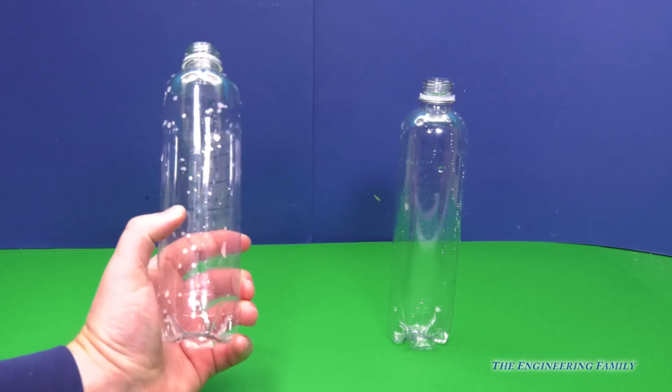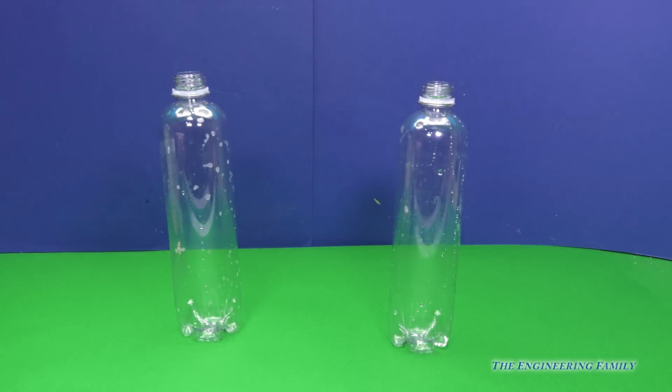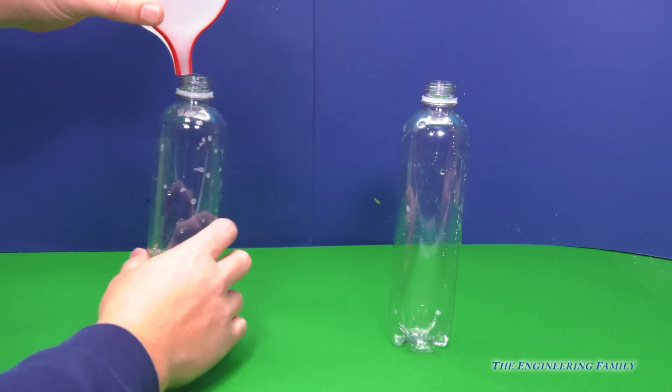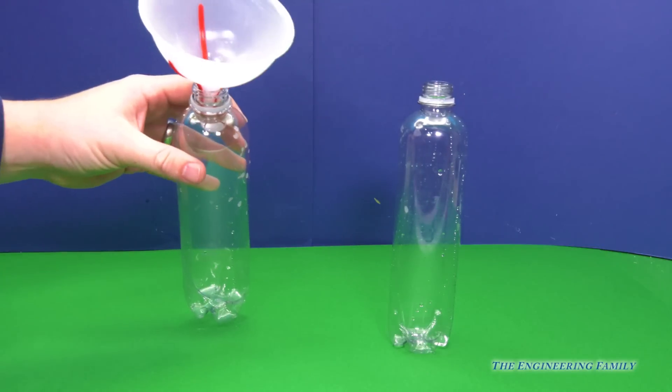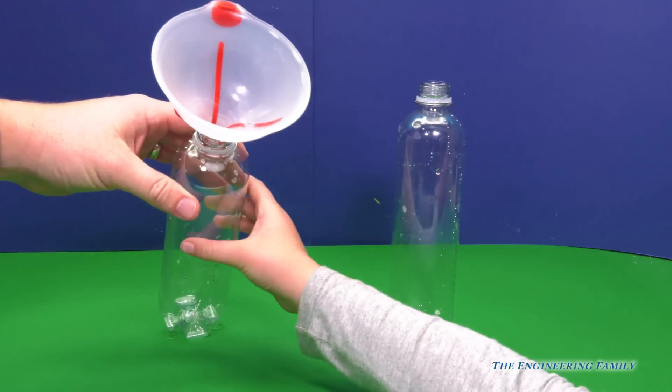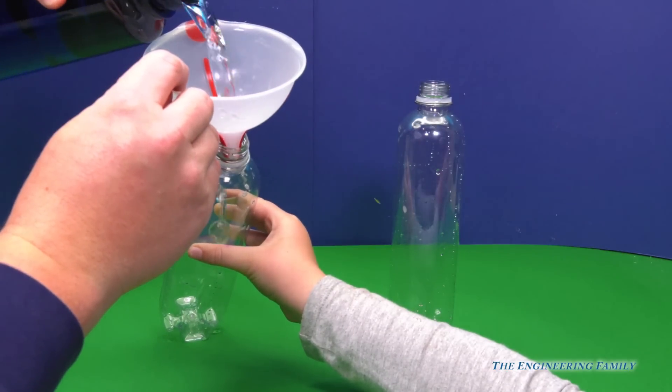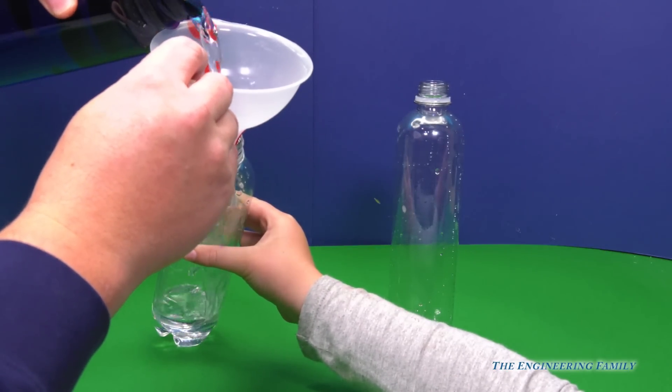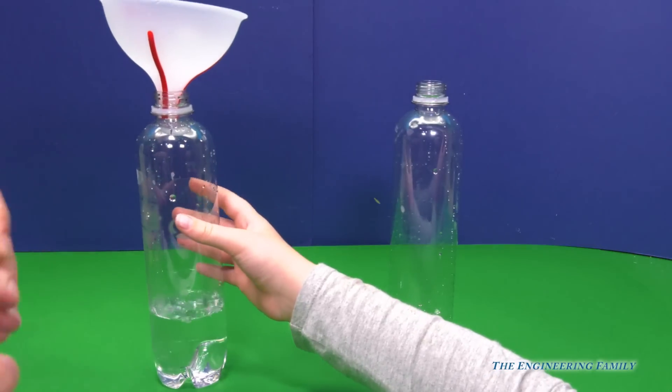Okay assistant, we're gonna use these bottles and make special lava lamps. So the first thing we do is we pour in some water. Alright assistant, will you hold that for me? I'm gonna hold this and put in some water. Oh, I spilled the water! Okay, so we got a little bit of water in there.